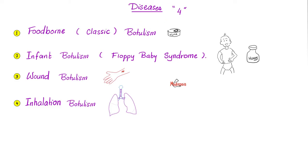Clostridium botulinum releases botulinum neurotoxin, causing the disease botulism. There are four types of botulism: the classic foodborne botulism from canned food or canned meat; infant botulism from honey spores, also called floppy baby syndrome; wound botulism; and inhalation botulism. The botulisms will be covered in the next video.